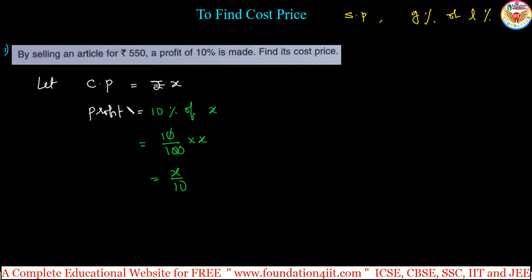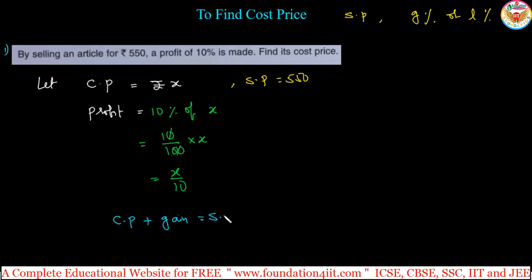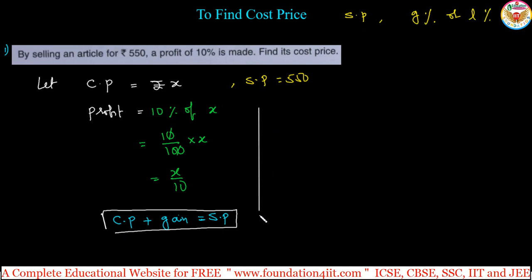Based on the formula: selling price is already given as 550. The relation formula for gain or profit — gain and profit are the same — is: cost price plus gain is equal to selling price.